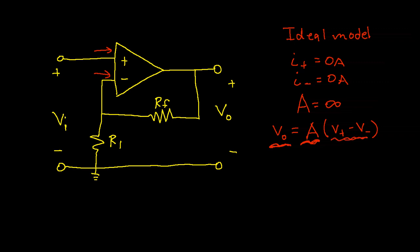And so the assumption that we will make is that the output, this point of the op-amp, will generate whatever voltage is necessary to make the difference between the input voltage for the non-inverting input and the input voltage for the inverting input essentially zero.